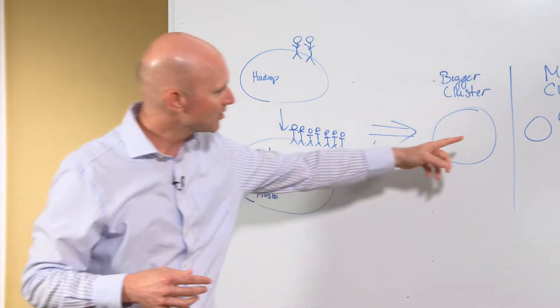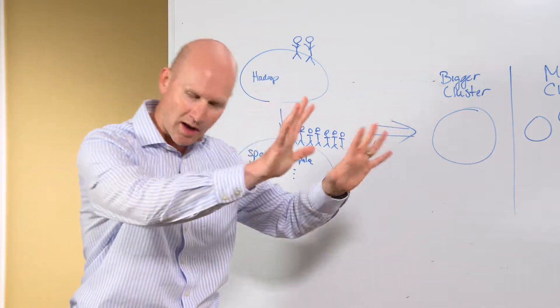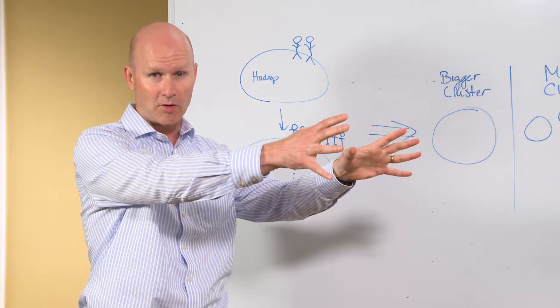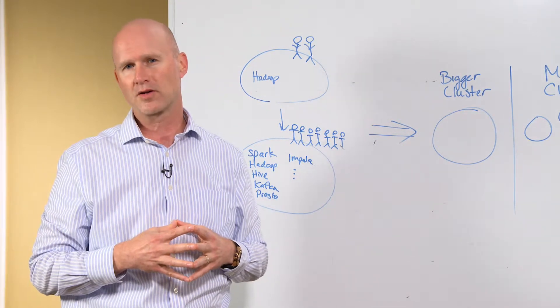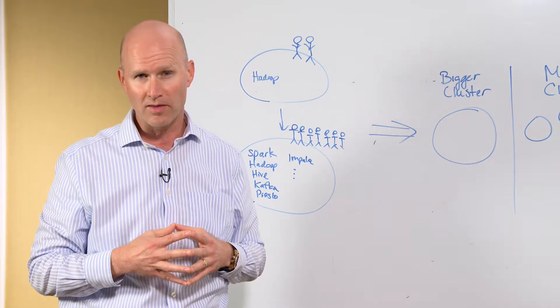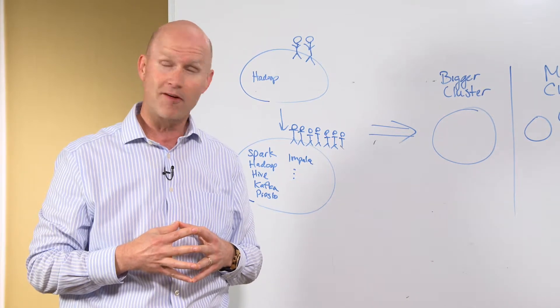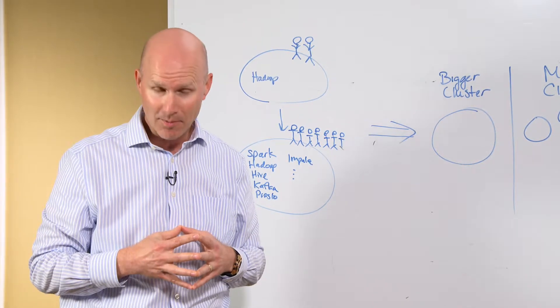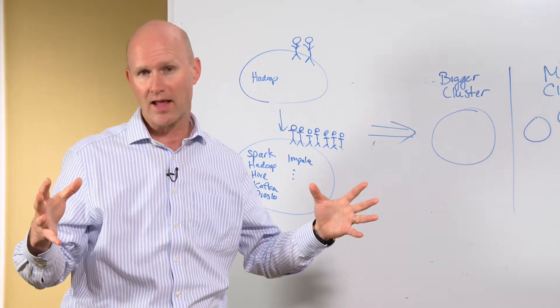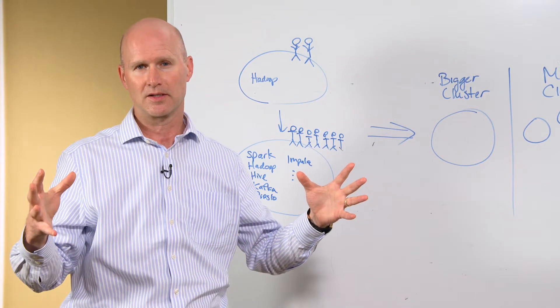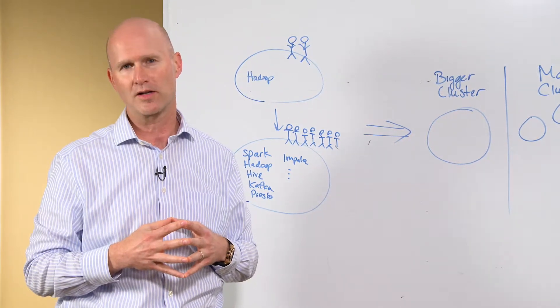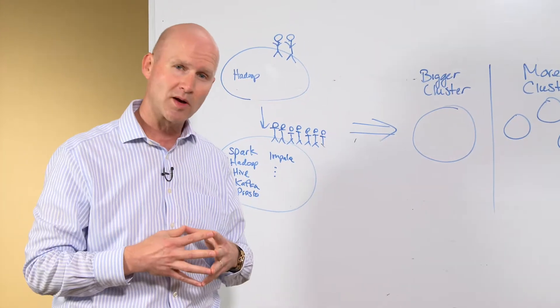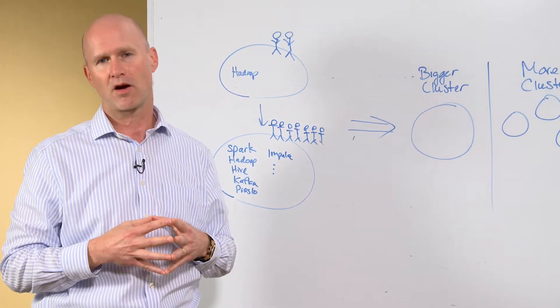So what most of them went to is, oh, we'll just get more clusters. Bob, okay, fine. We'll give you your team, your own cluster. John's team will have his own cluster. So some of the very large institutions that we've met with are up to 55 separate standalone analytics clusters. So let's pause there for a moment and talk about the impact to an organization and why many of these organizations found that intolerable.